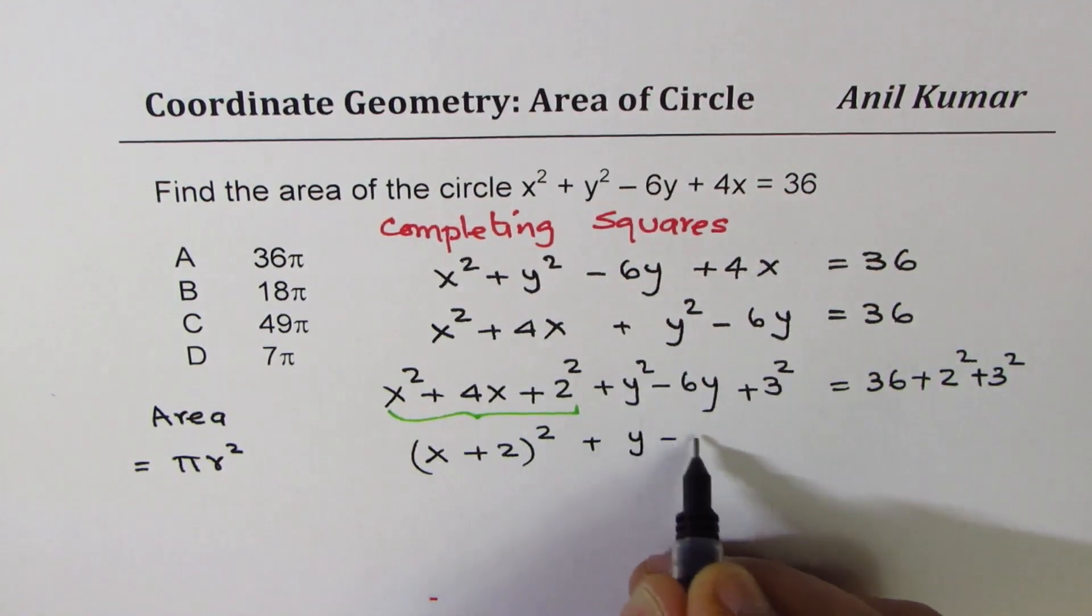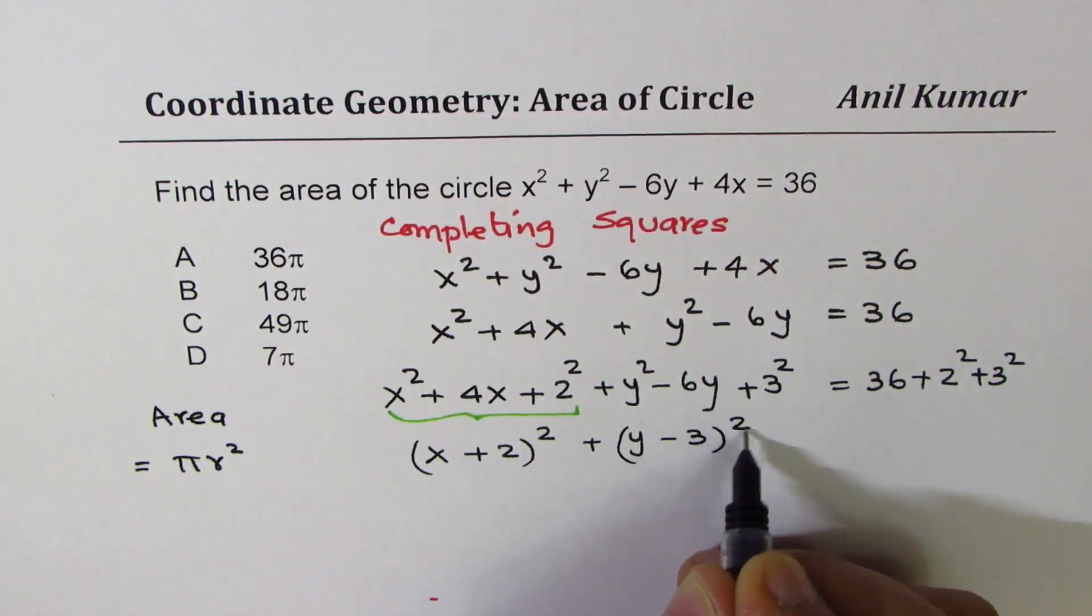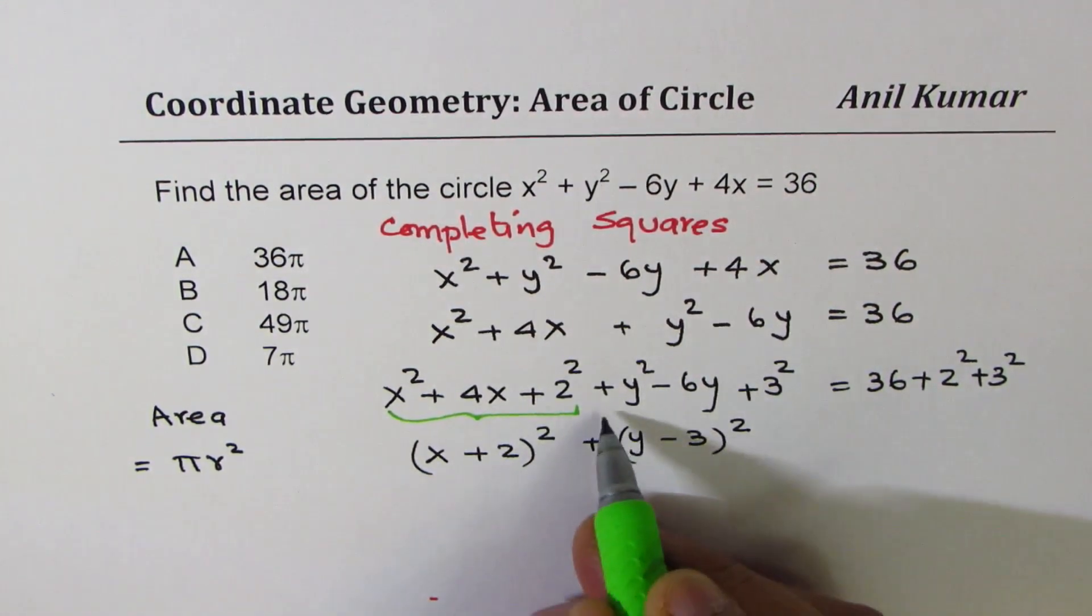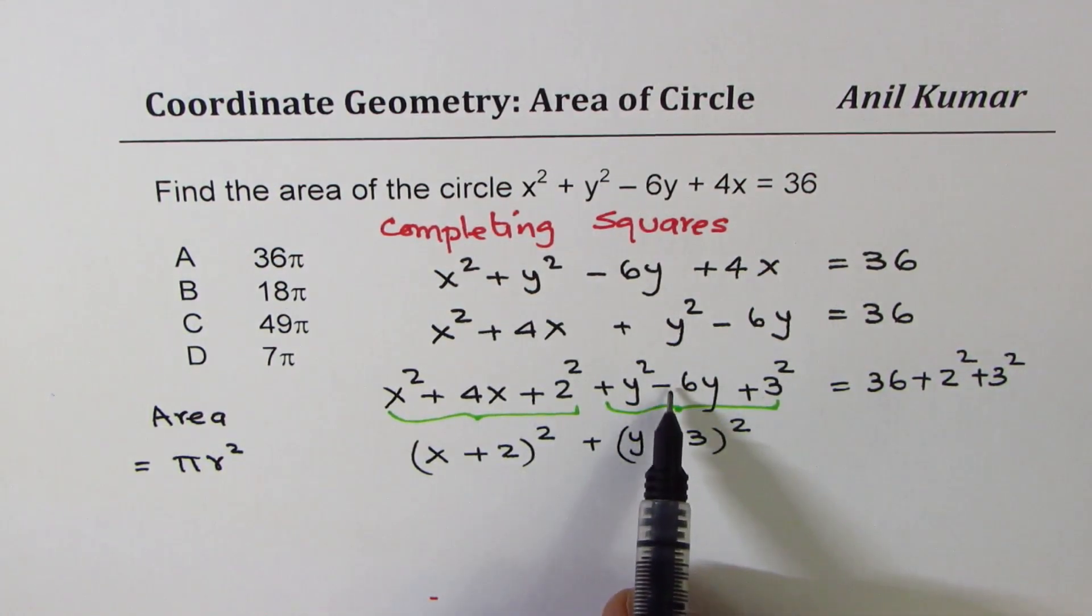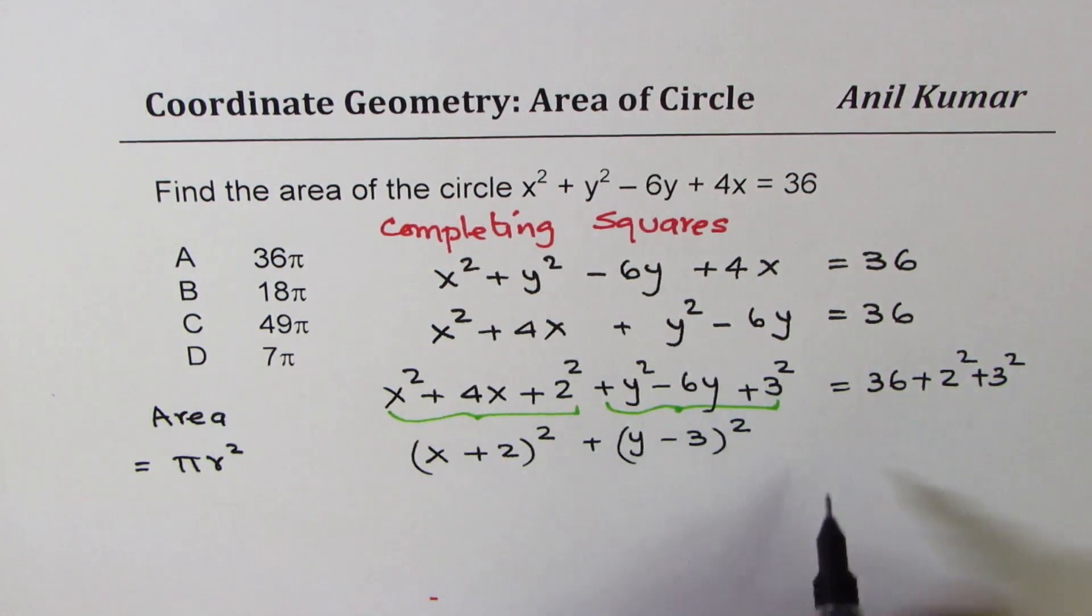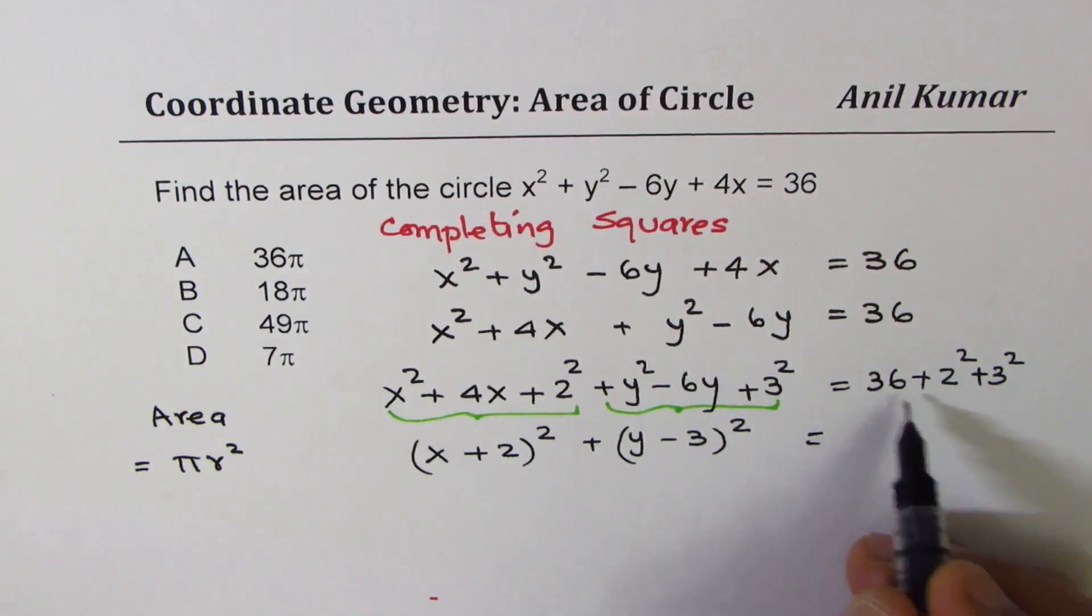On the other hand, y - 3 square is the term. So these three terms, trinomial, can be written as (y - 3)². a² - 2ab + b². You get it. And let us add them.